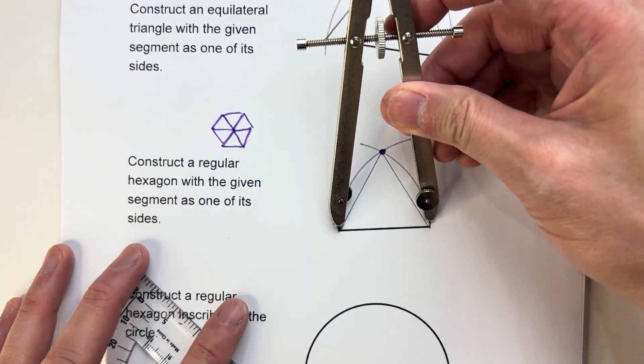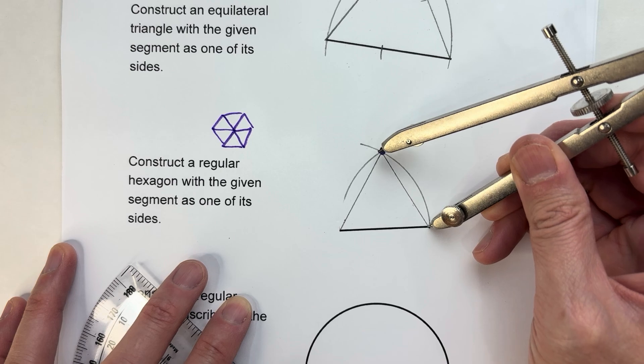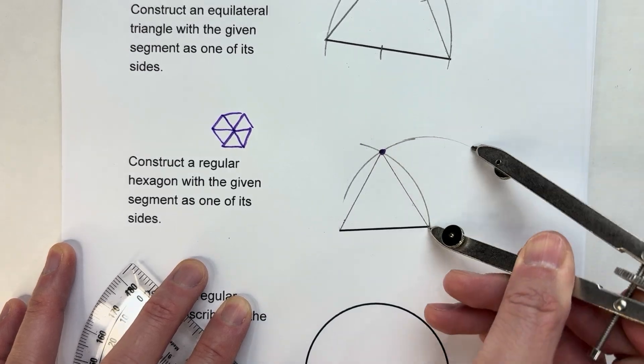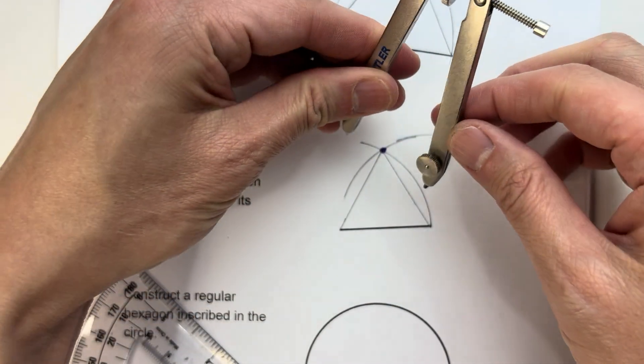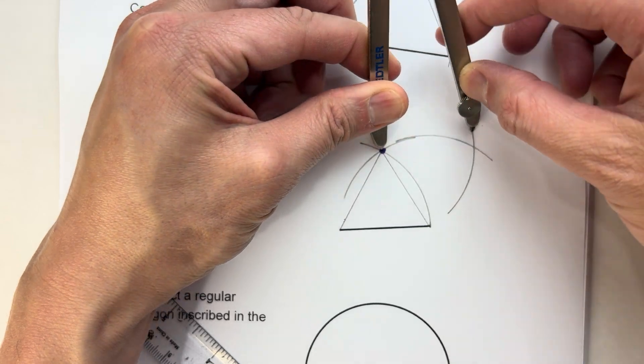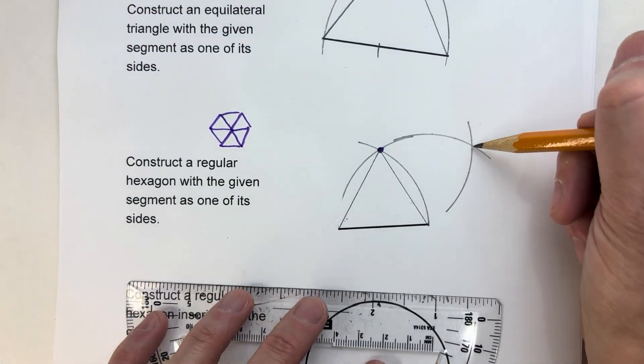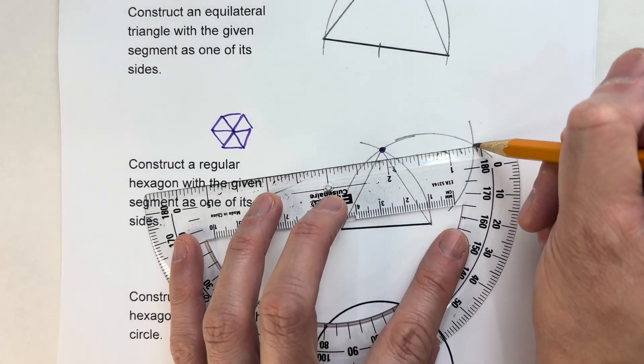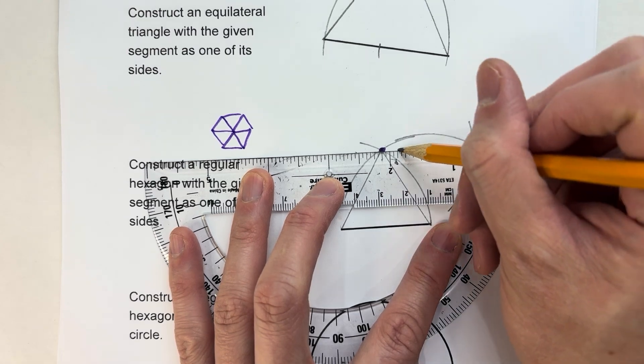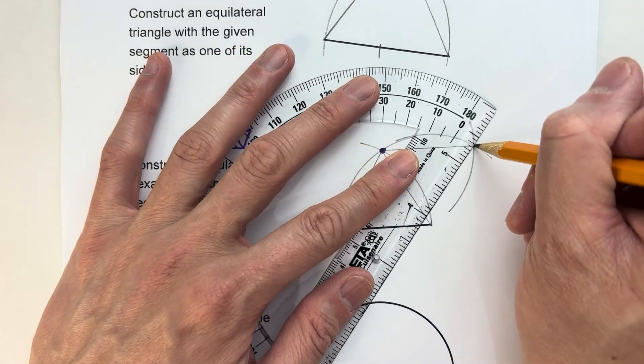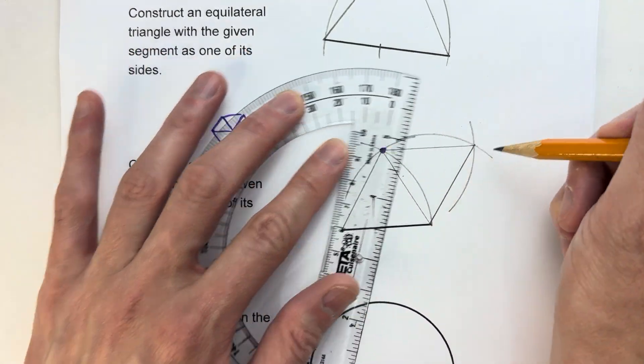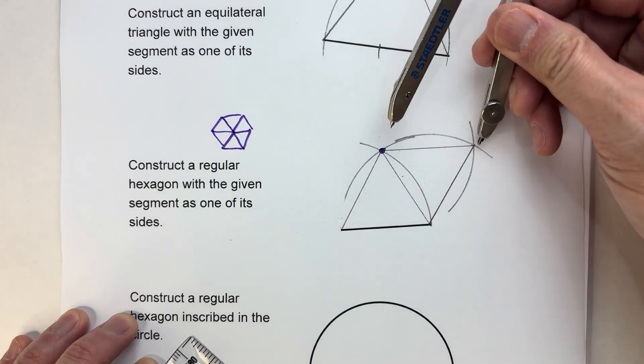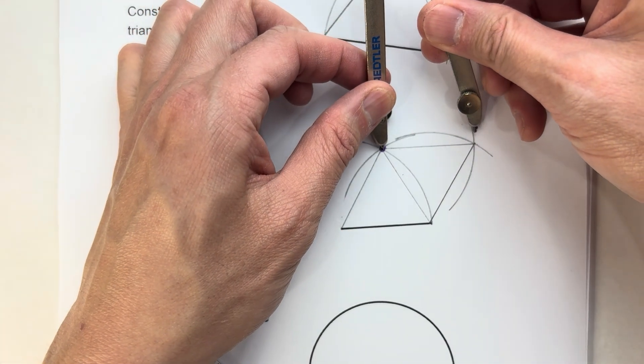Because they're all equilateral triangles and they're all the same, I don't have to change my compass setting. Here's my next equilateral triangle right here. You don't have to necessarily draw in each triangle to make the hexagon, but I like to do it for the visual sake of being able to see what's going on.